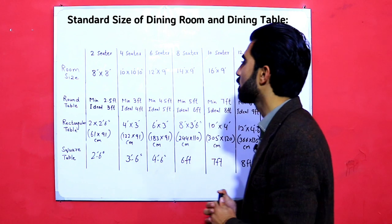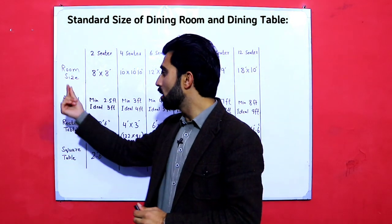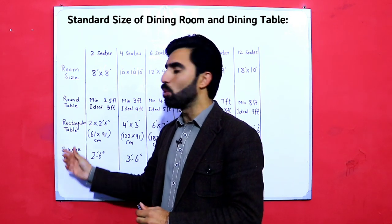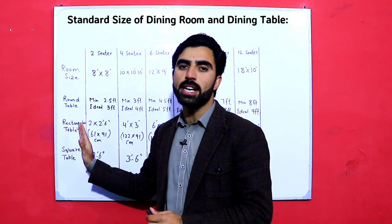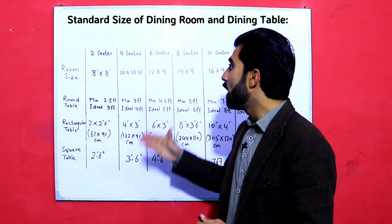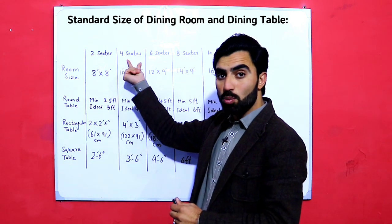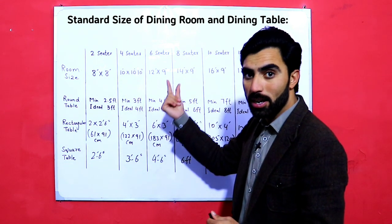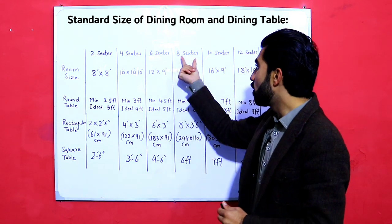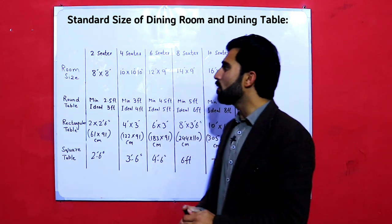In the first column we have room size, and then round table, rectangular table, and square table — three types of dining tables used in the dining room. The second column covers details for two sitters, then four sitters, six sitters, eight sitters, ten sitters, and twelve sitters.